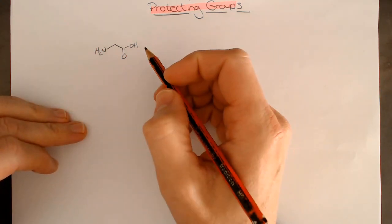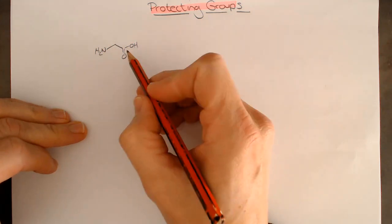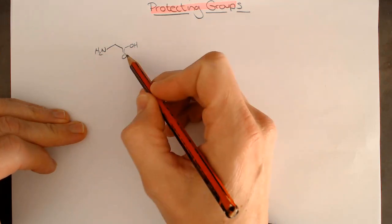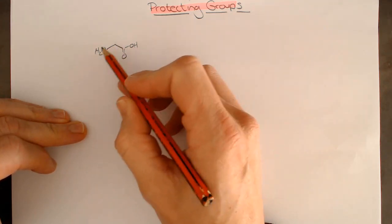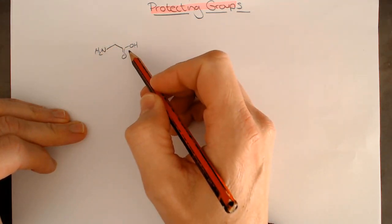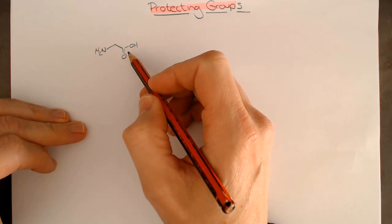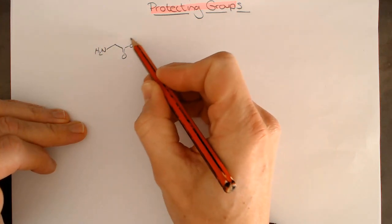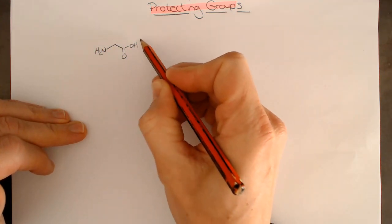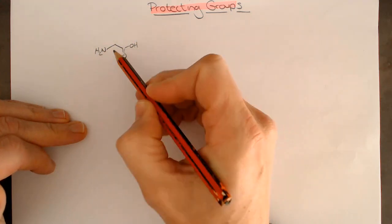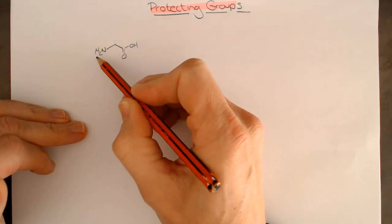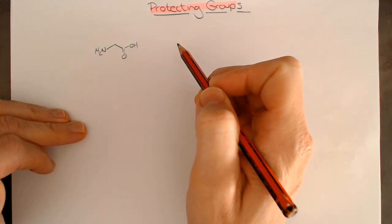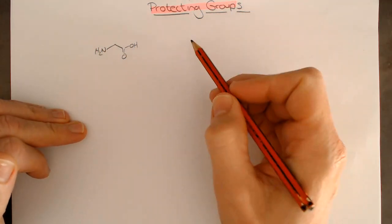As an example, if we are wanting to form an ester of this molecule, amines can also react with esters, so we have to be careful. Also, if we are wanting to couple an amine to this carboxylic acid from another molecule, the problem is the molecule itself already has an amine, so we're likely to cause some polymerization.